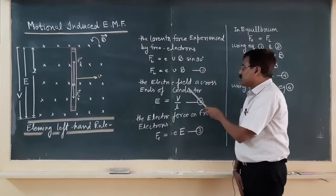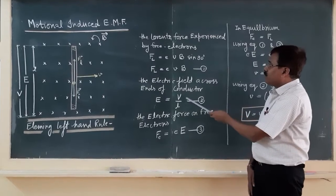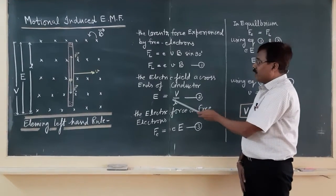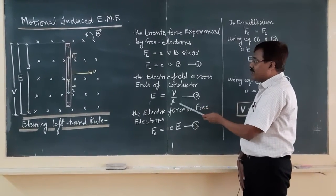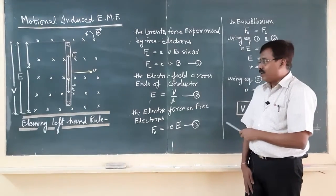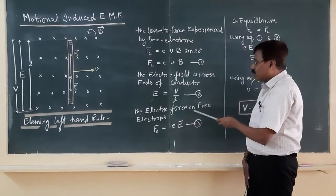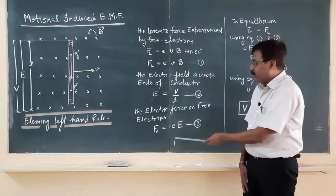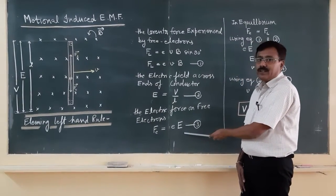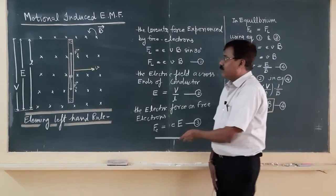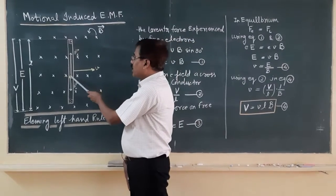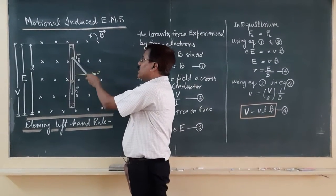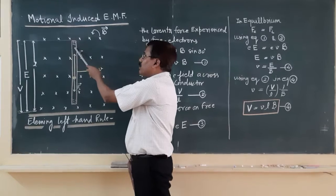So, what will be the electric force across the end of the conductor? Electric field E is equal to V by L, and what will be the electric force on the free electron? It will be F_E equals e into capital E, and this electric force on the free electron will act towards the upper end, towards the positive end.